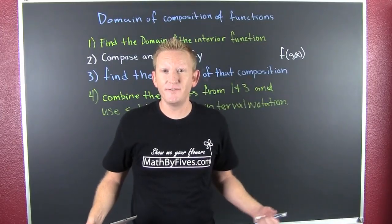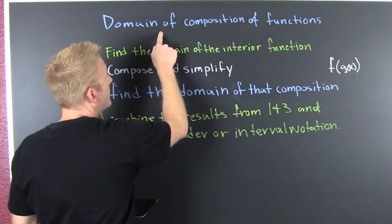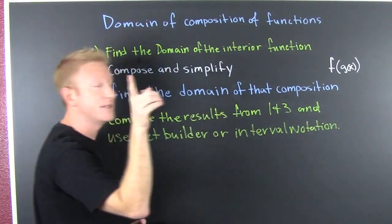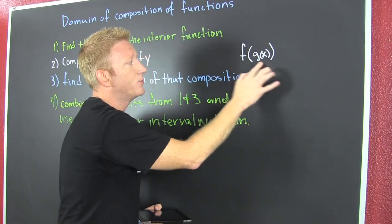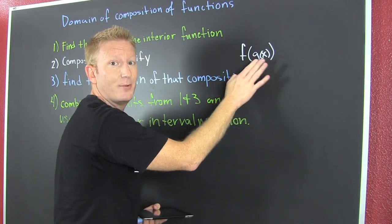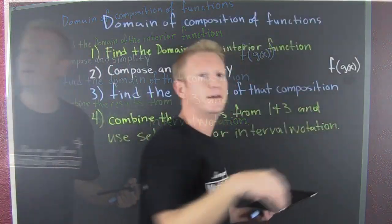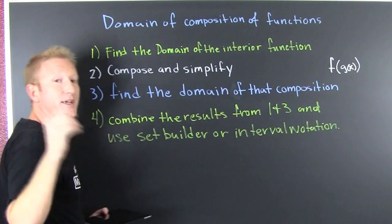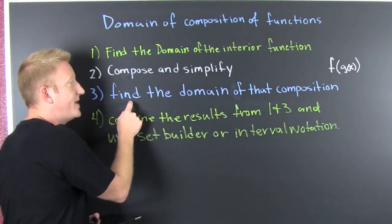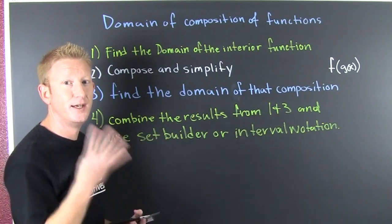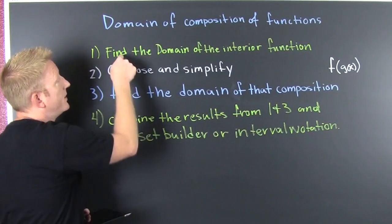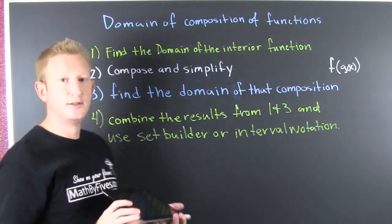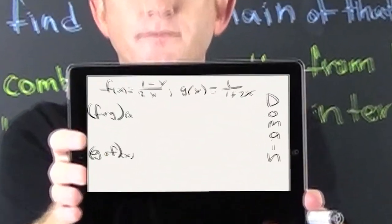Let's look at the domain of composition of functions. The first thing we want to do is find the domain of the interior function. When we compose functions, we take one and stick it inside the other. The interior function is g(x) — whatever you're putting inside. You want to see what violates that domain, then compose and simplify. After the composition, you find the domain of that composition, because those are more values to exclude. Then step four: combine the results. You can use set builder or interval notation.